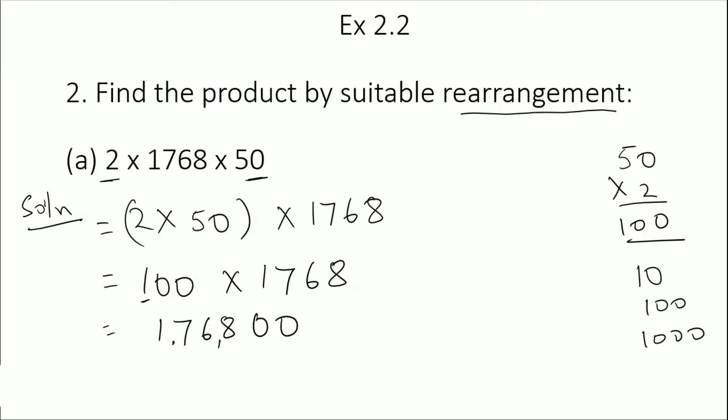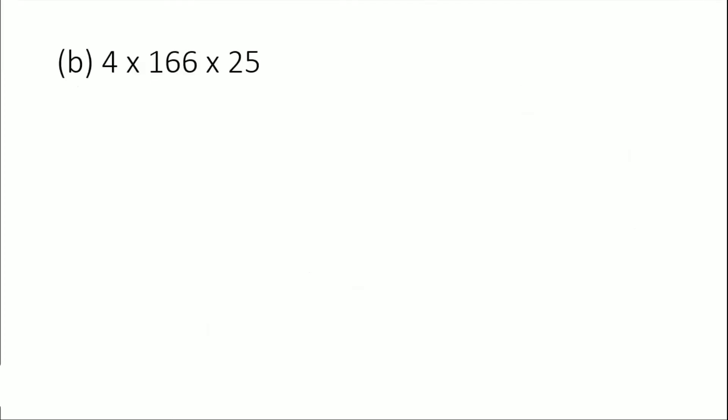Coming to the next question: 4 multiplied by 166 multiplied by 25. Which two numbers should we multiply so that we get a zero? Let's see, 4 times 6 is 24, 4 times 5 is 20. I'm multiplying the ones digit to check whether I'm getting a zero. 4 times 5 gives me 20, so I will group these two together as a pair and write 166.